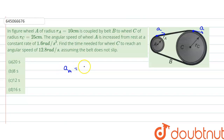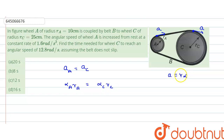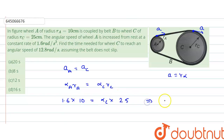To prevent slipping, acceleration of A equals acceleration of C. We can write: alpha_A times r_A equals alpha_C times r_C. Substituting the known values: 1.6 times 10 equals alpha_C times 25. Solving this, the angular acceleration of C turns out to be 0.64 radians per second squared.